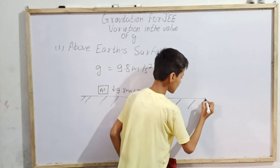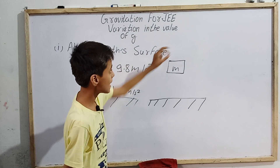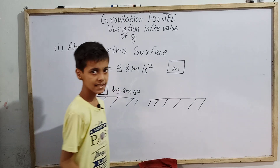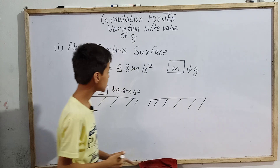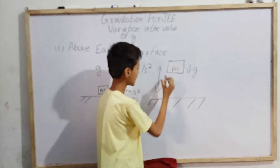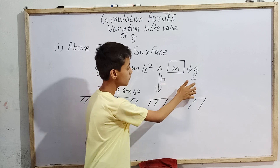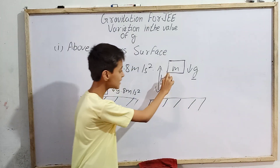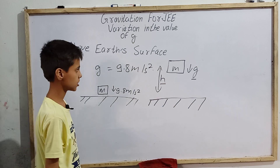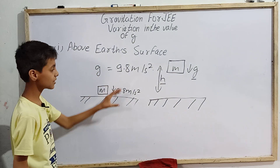Now consider another case. Here is the surface of Earth, and the same block is placed at a very great height — say, released from a tall building. As it starts falling down, what will be the acceleration due to gravity g? Here, the g value may not be 9.8 meters per second squared. Imagine the height of the block is h. The value of g will now depend on h. The lesser the h, the higher the g; the higher the h, the lesser the g. So h and g are inversely proportional to each other.